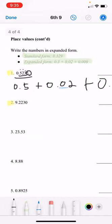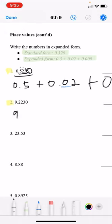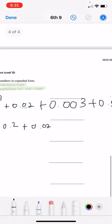And then for number two and then for number two again we're going to do the same thing we have 9.223 okay so we're going to do 9 plus 9 plus 0.2 the tenths value plus 0.02 right because it's the hundredths value right.